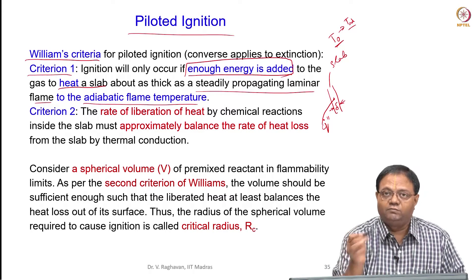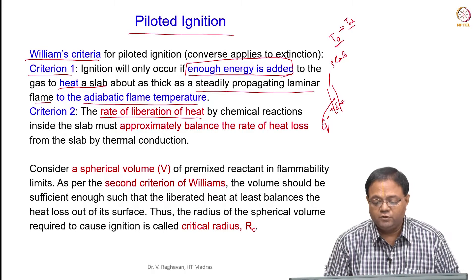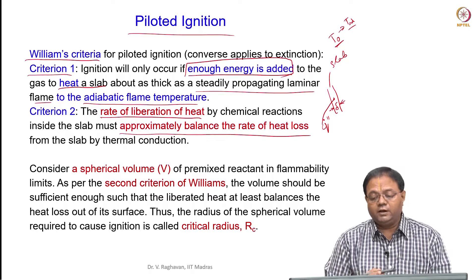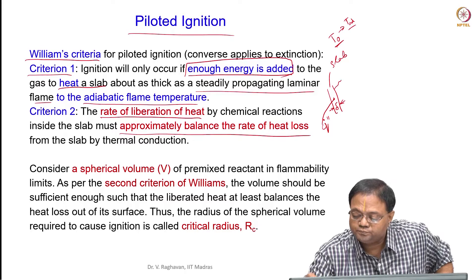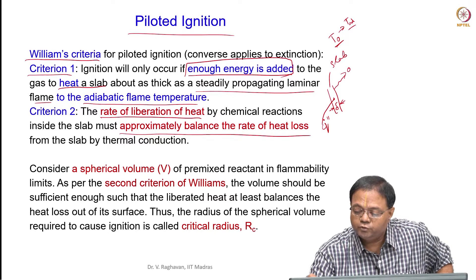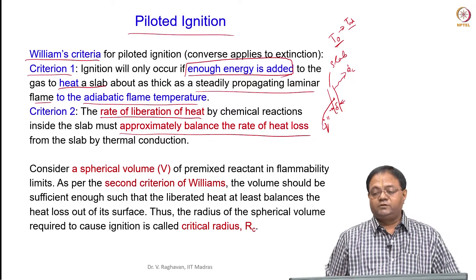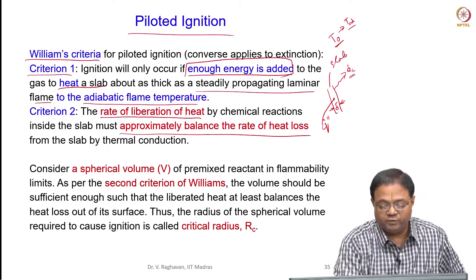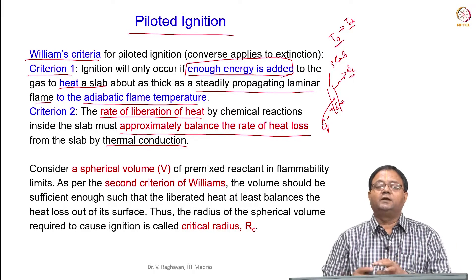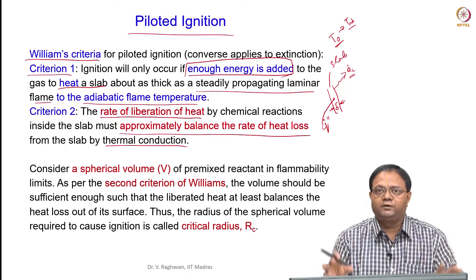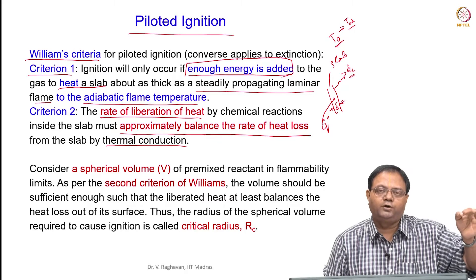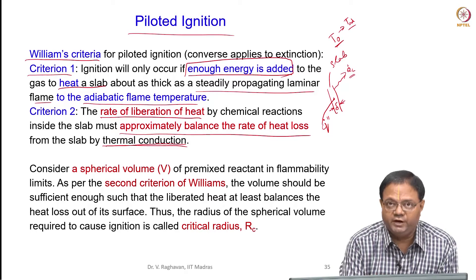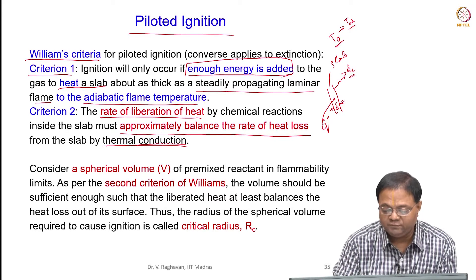The second criterion we have already seen: the rate of liberation of heat — the heat released by the chemical reactions inside this slab of delta thickness — must approximately balance the rate of heat loss from the slab by conduction. QL-dot is the rate at which heat is lost. In the previous case where the mixture was fed inside, convection heat transfer was predominant. In this case, there is a still premixed gas and a localized ignition is provided at a particular point, so heating takes place by conduction.